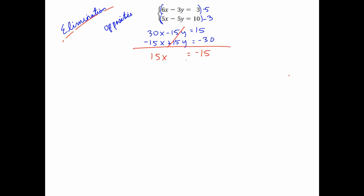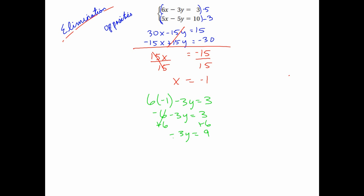So I look at this, divide by 15 because I only have one variable left, and we get x equals negative 1. Once you find x, it's just like substitution or graphing — you plug it back in. So x equals negative 1. I can pick either equation; let's do the first one: 6 times negative 1 minus 3y equals 3. I get negative 6 minus 3y equals 3. Add 6 to both sides: negative 3y equals 9. Divide by negative 3: 9 divided by negative 3 is negative 3.